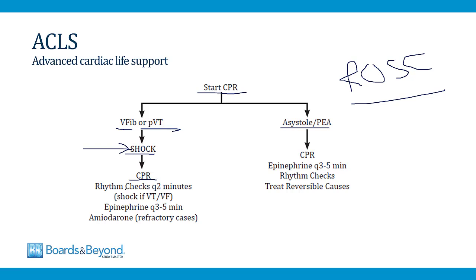As you're doing CPR, you stop every two minutes to check the rhythm. If the rhythm remains VT or pulseless VF, you shock again. While doing rhythm checks and repeat shocks, you can administer epinephrine every three to five minutes. Amiodarone is used in refractory cases to try to terminate the ventricular tachycardia or fibrillation. For asystole or PEA, you continue CPR, administer epinephrine every three to five minutes, do rhythm checks, and the mainstay of treatment is to identify a reversible cause to achieve return of spontaneous circulation.